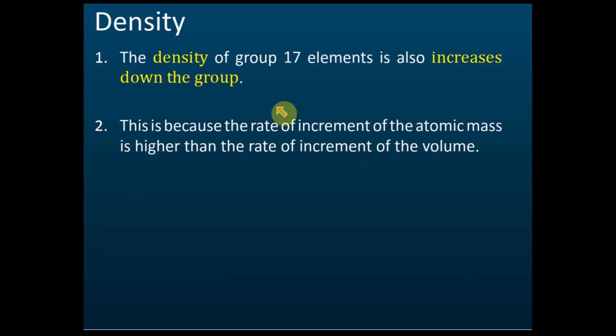The density of group 17 elements also increases down the group, for the same reason as group 1. Down the group, both mass and volume increase, but the rate of increase of mass is higher than the rate of increase of volume, and therefore the density increases.